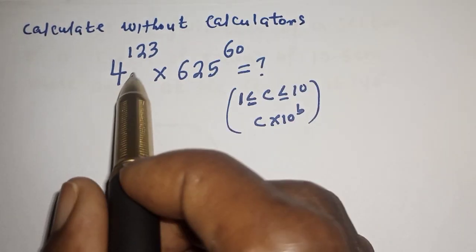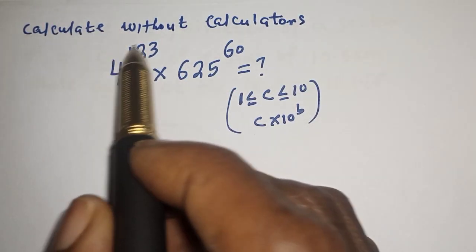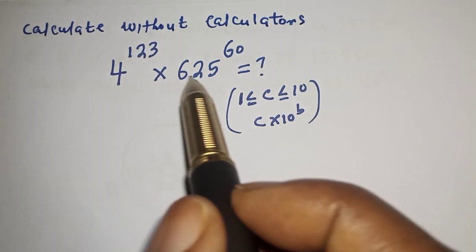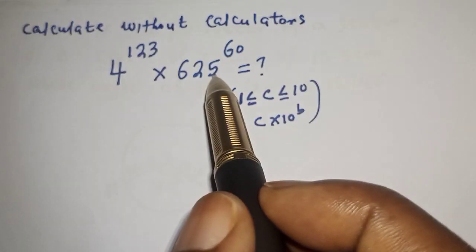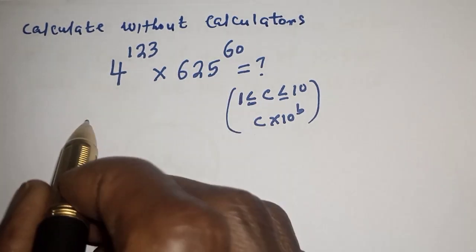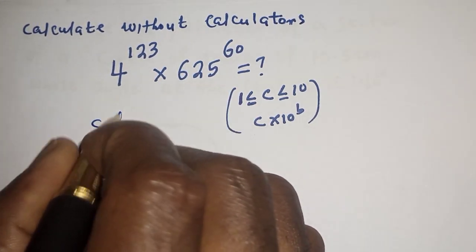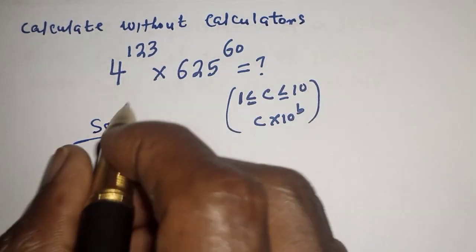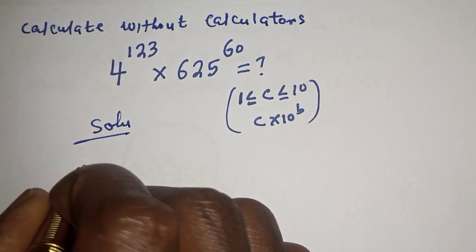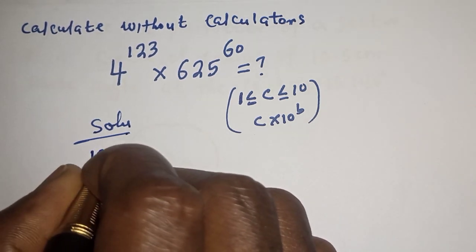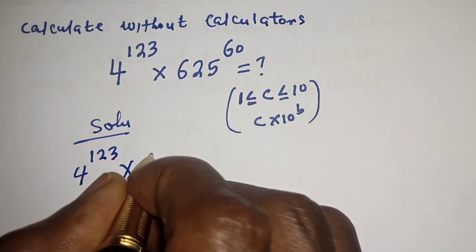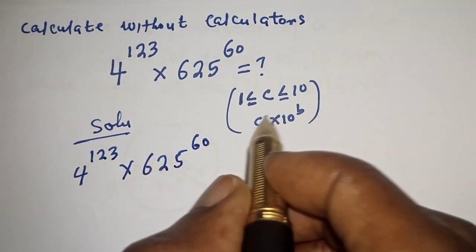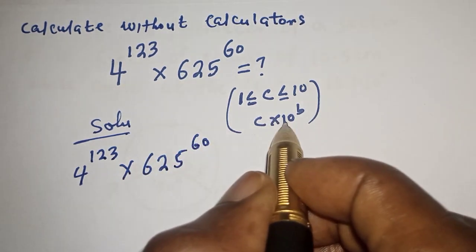Hello, welcome to Math Focus. In this class, we want to calculate this math problem without using a calculator: 4 raised to power 123, multiplied by 625 raised to power 60. The solution is going to be expressed in the form C multiplied by 10 raised to power B.